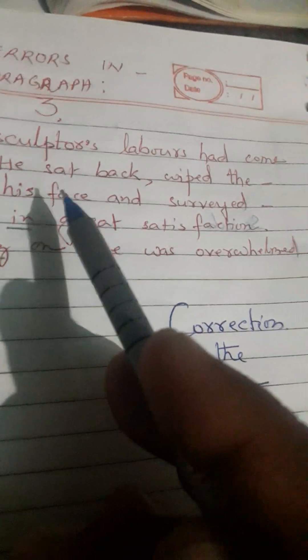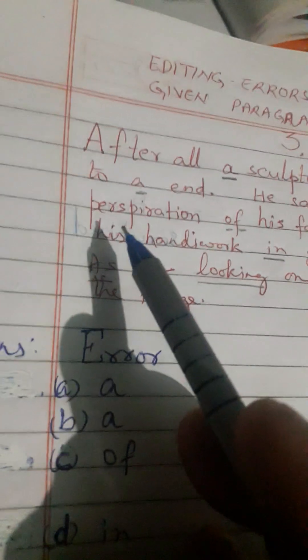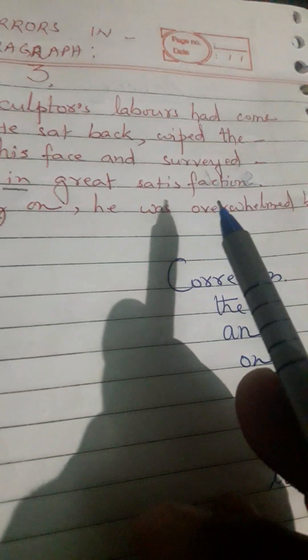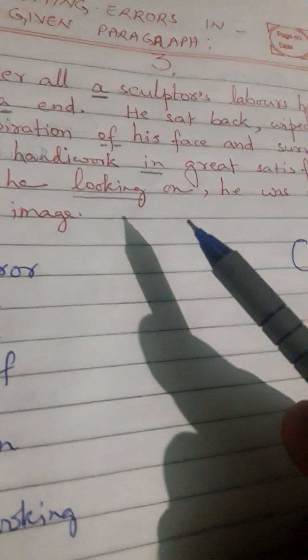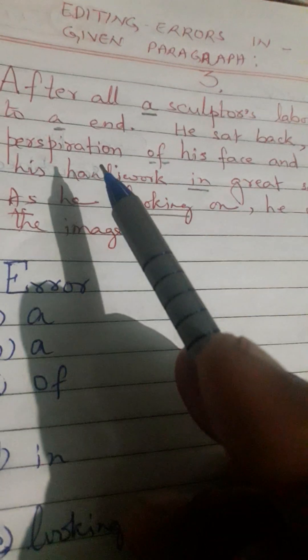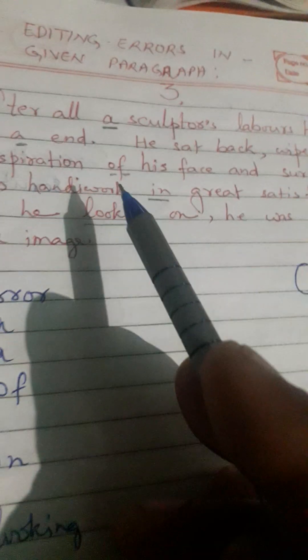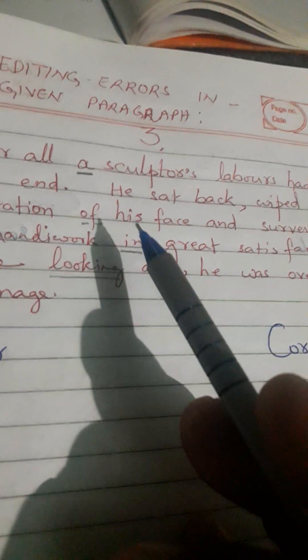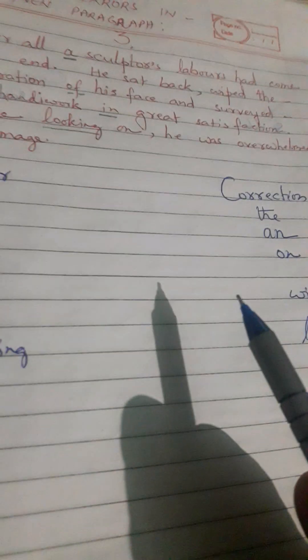Next: 'She sat back, wiped the perspiration of his face and surveyed his handiwork in great satisfaction.' Here, 'of' must be replaced by 'on.' You can realize it by reading the sentence once, twice, or as many times as you need. It should be 'wiped the perspiration on his face.' So 'off' must be replaced by 'on.'